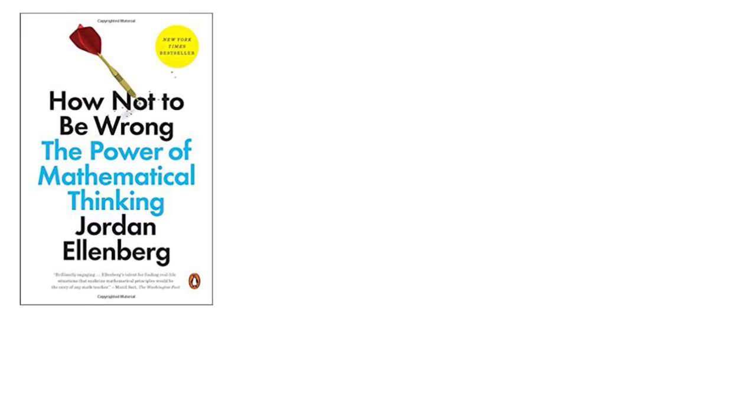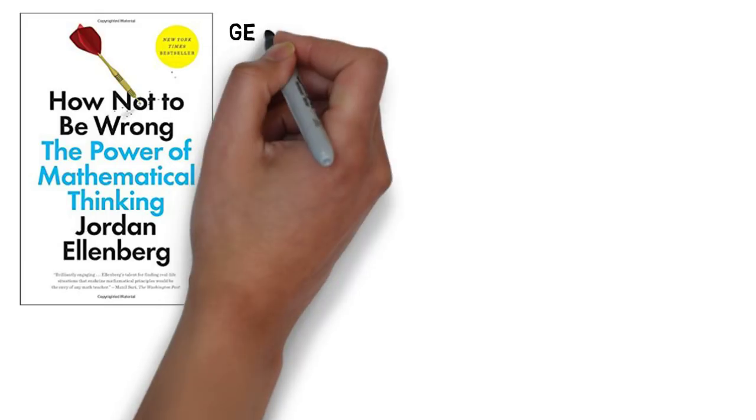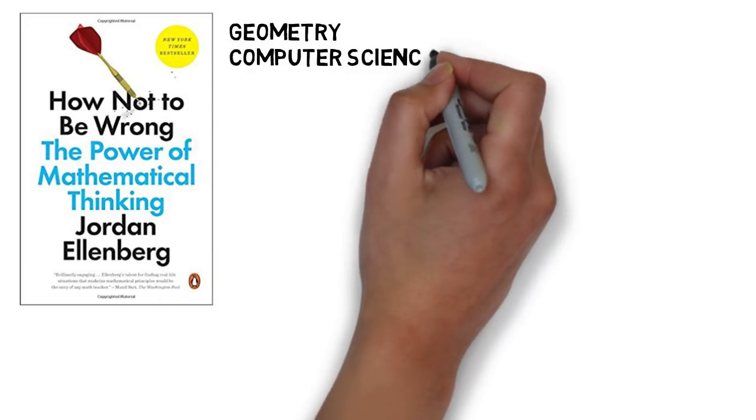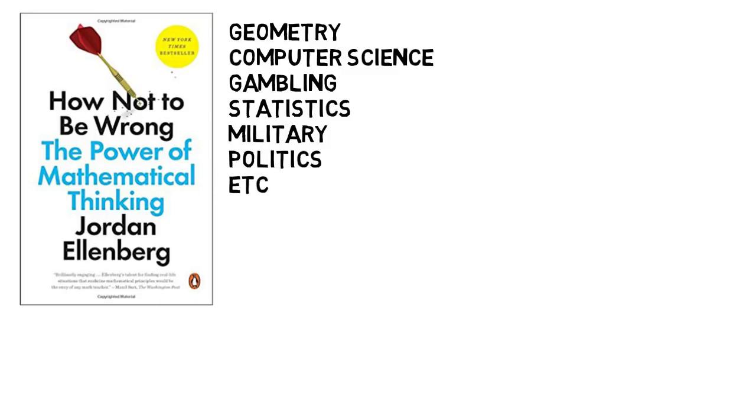One book out there for math lovers is How Not to Be Wrong, The Power of Mathematical Thinking, which is one of my favorite books hands down. It talks about a lot of subjects from geometry, computer science, gambling, and statistics, to the military and politics, but everything is discussed from a more mathematical standpoint.